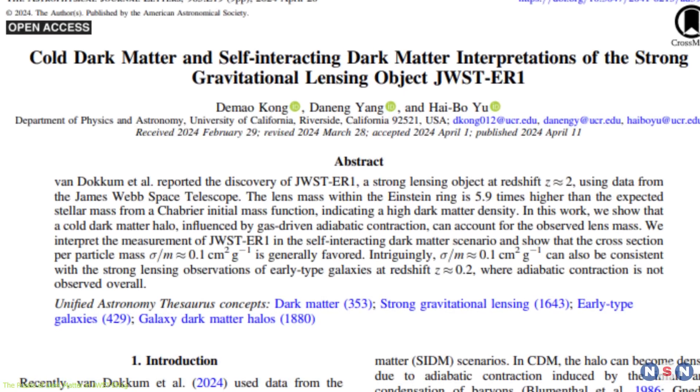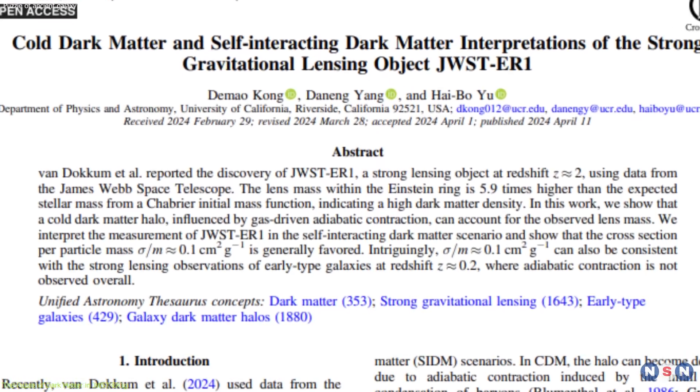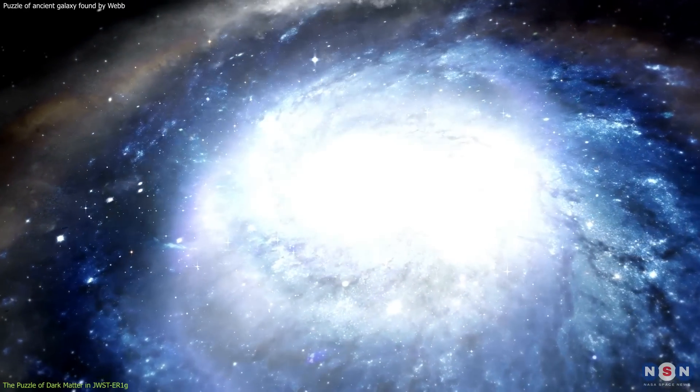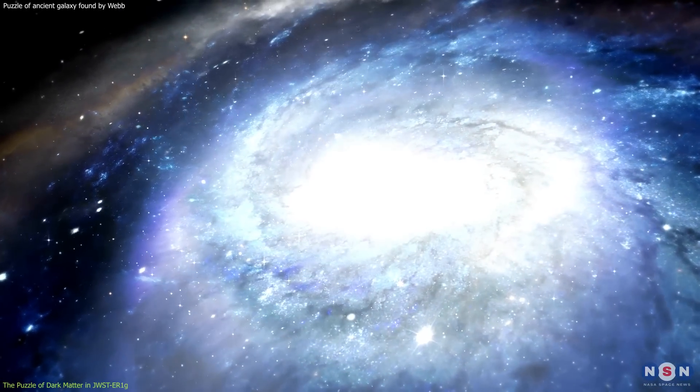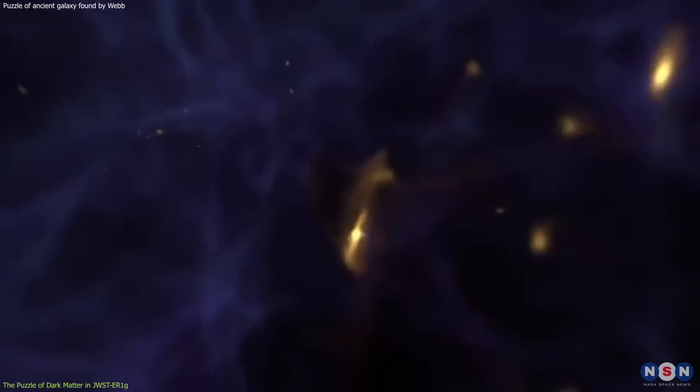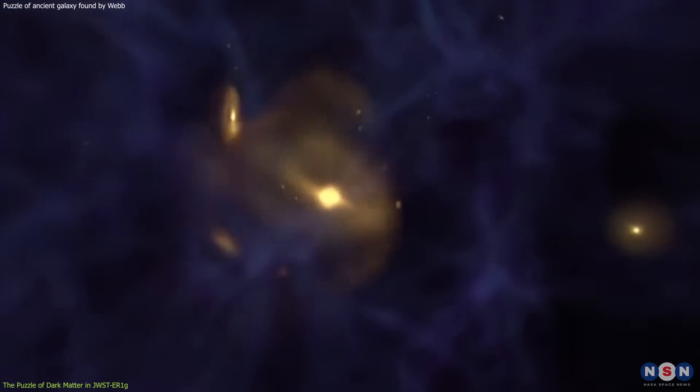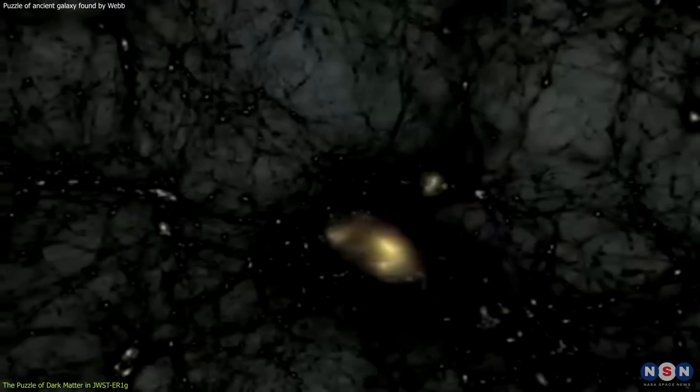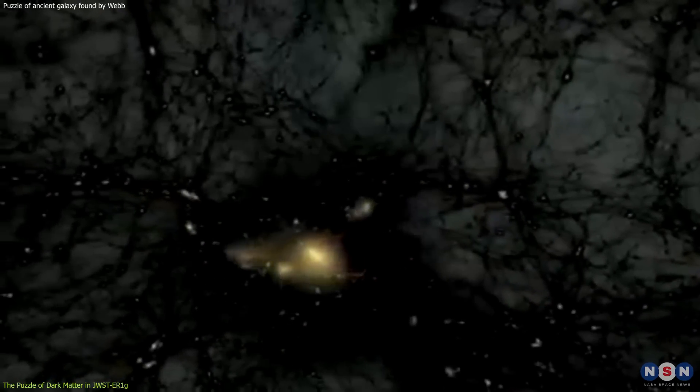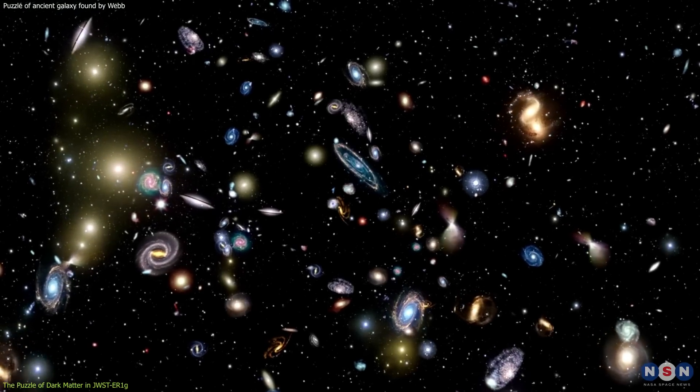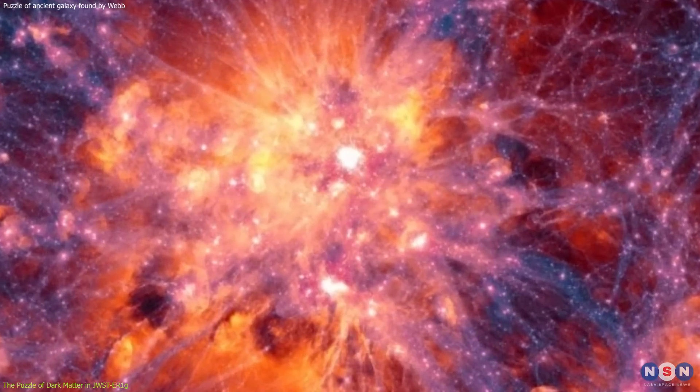This hypothesis is supported by numerical studies and simulations that mimic the conditions in the newly discovered galaxy. These studies suggest that the dynamic processes involved in galaxy formation could lead to variations in dark matter density that are not uniformly observed across all galaxies. Thus, the unique conditions in this galaxy provide a natural laboratory for testing theories of dark matter and its interactions with baryonic matter.